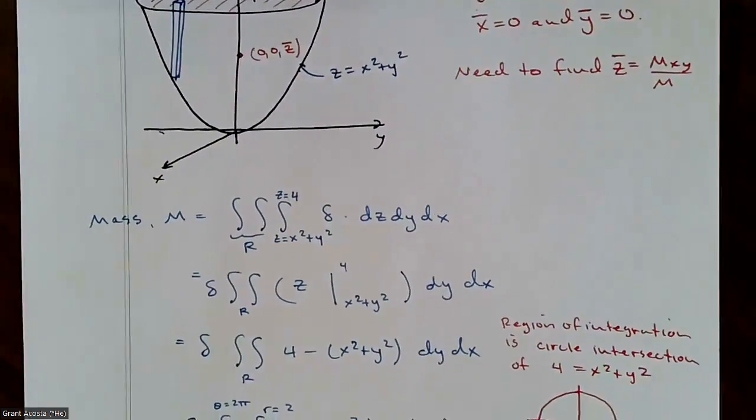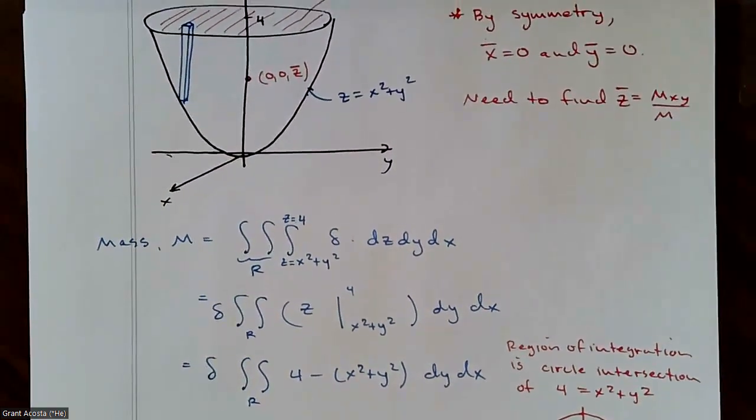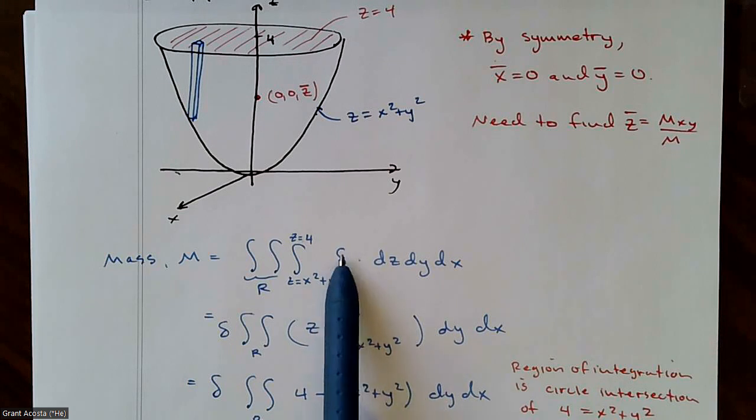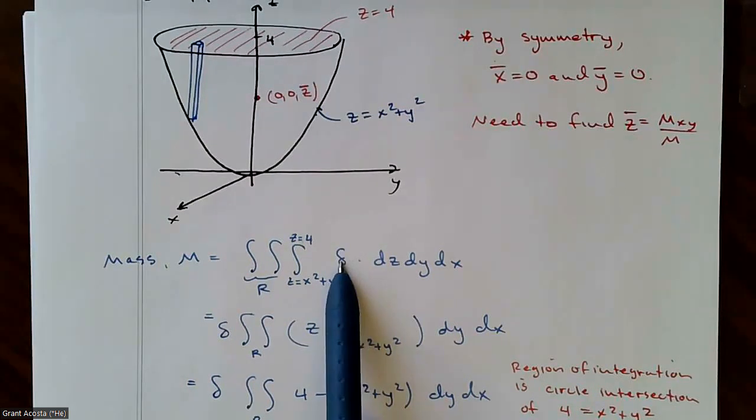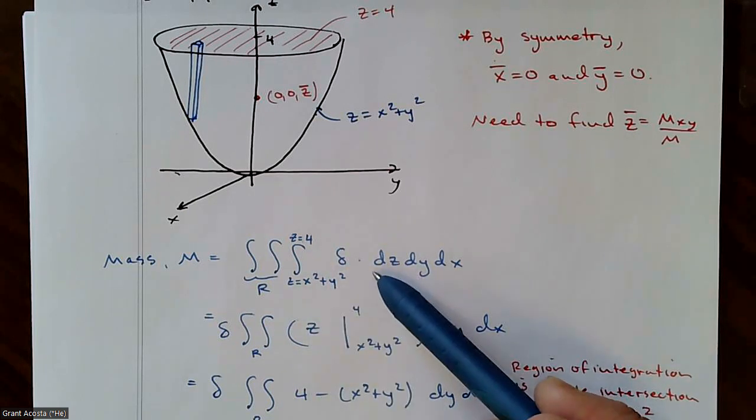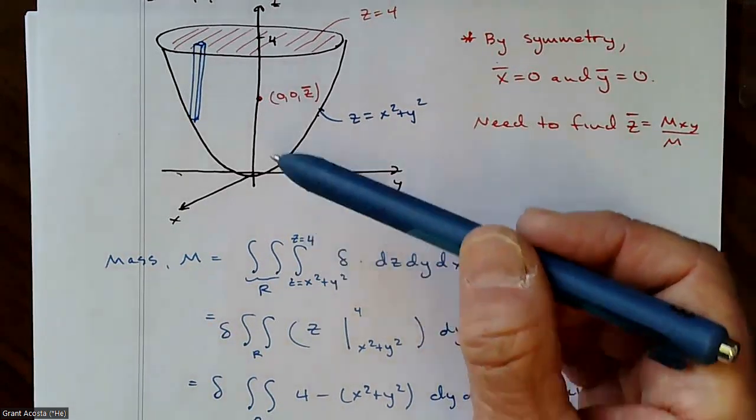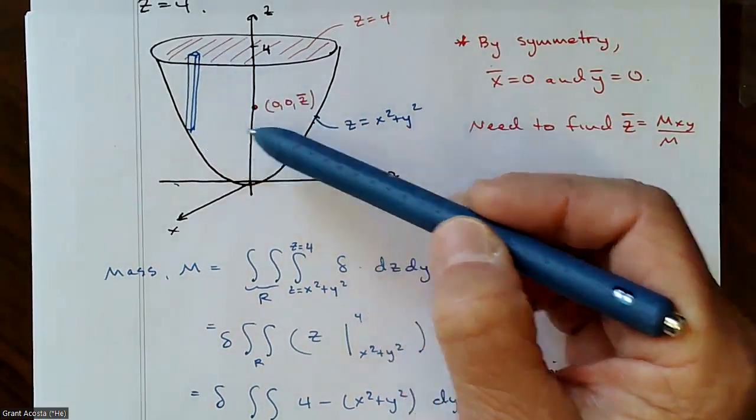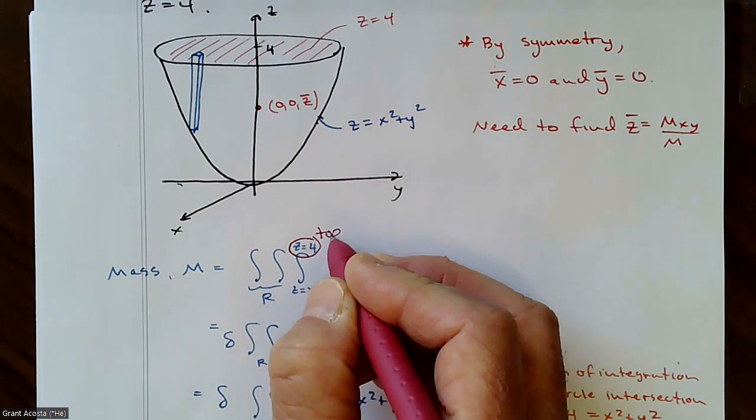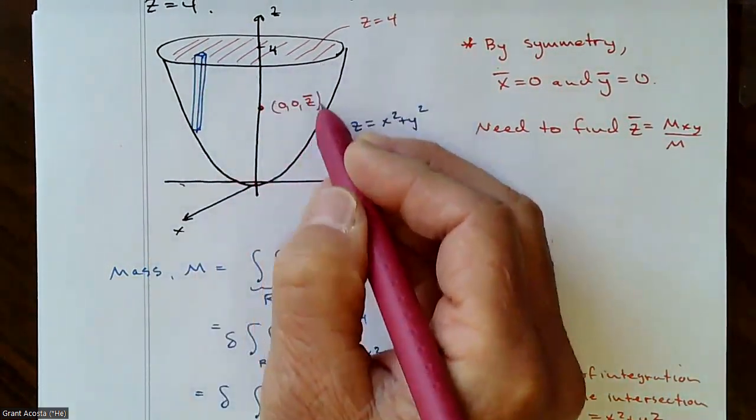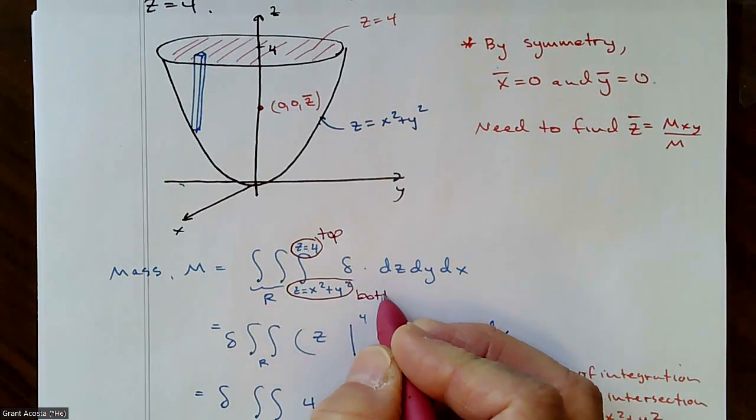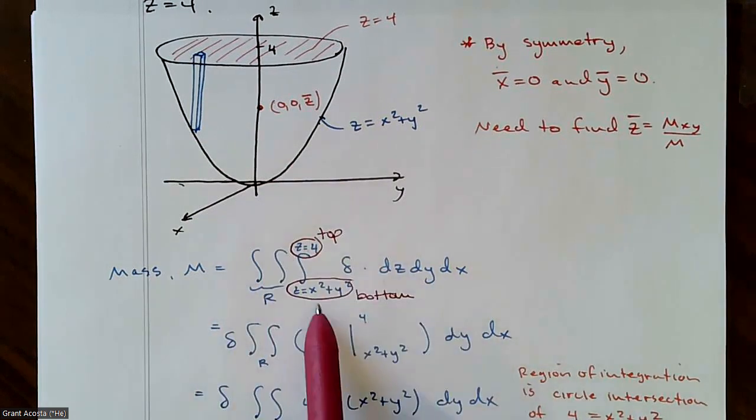So let's start with the mass. The mass is, we're going to do a triple integral here. Density, if it's constant, we'll just acknowledge that means it's some number, some constant, we'll just write delta there for it. And remember with triple integrals, we want to imagine now some vertical columns in here that stretch from z equals four is your top function. Every column in here will hit that on the top. And on the bottom, they will hit z equals x squared plus y squared, my paraboloid.